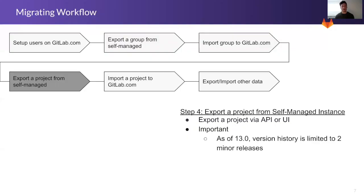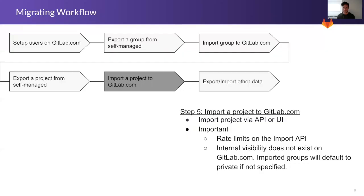Once groups are exported and imported into GitLab.com, step four is to export the project from your self-managed environment, which can be done via API or UI. The version history applies as of 13.0. Step five is importing the project to GitLab.com, which can also be done via API or UI. Again, rate limits apply and internal visibility needs to be considered.